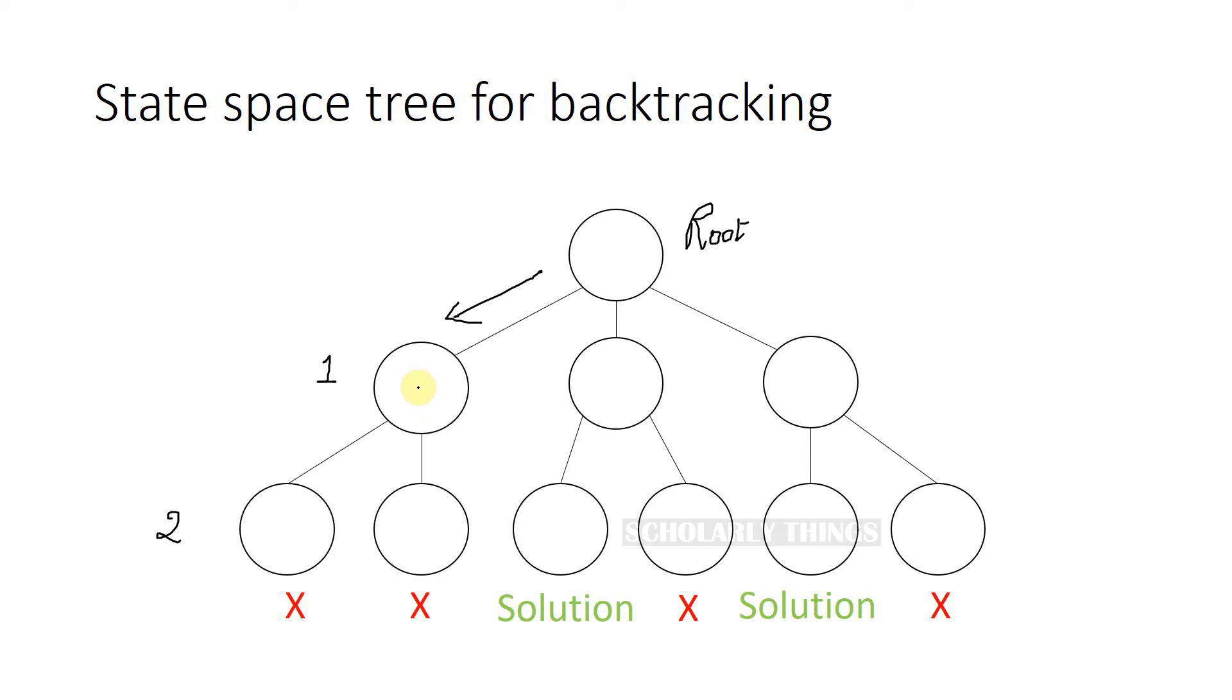If it is not violated, then you consider this particular node and you go for the next level. After this node, say you consider this node in the second level, and at this level the constraint is getting violated.